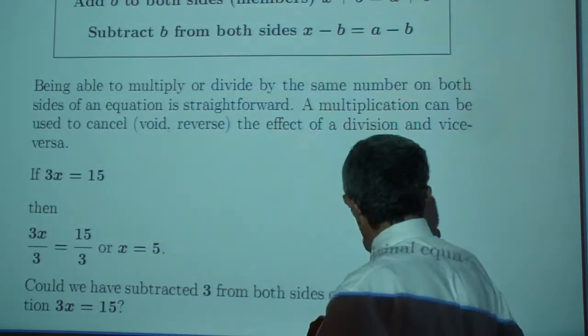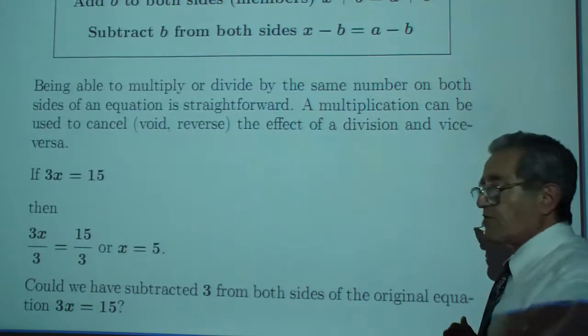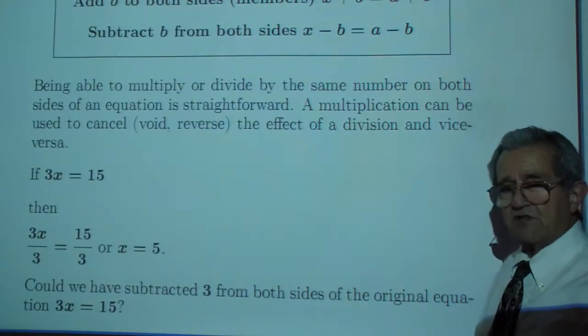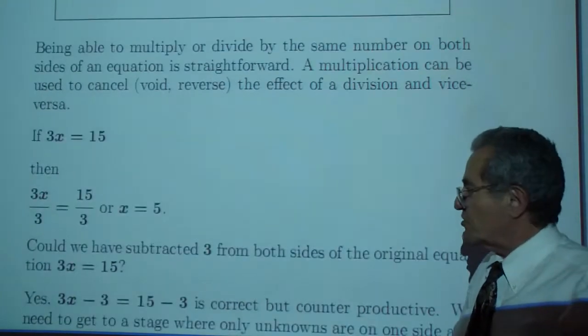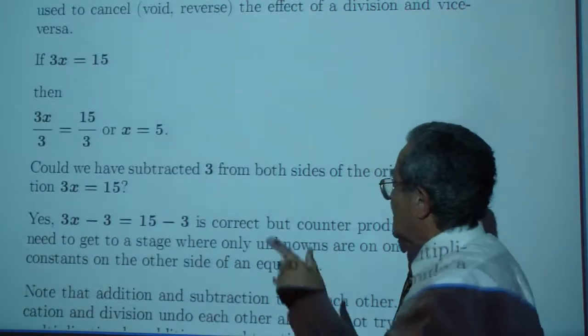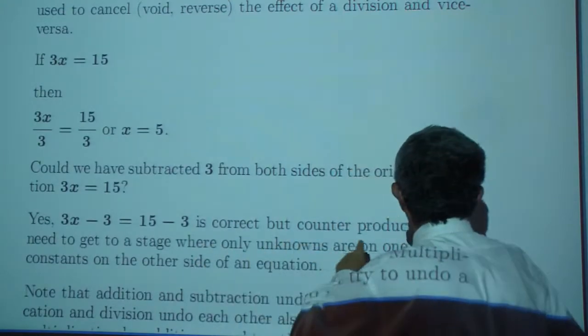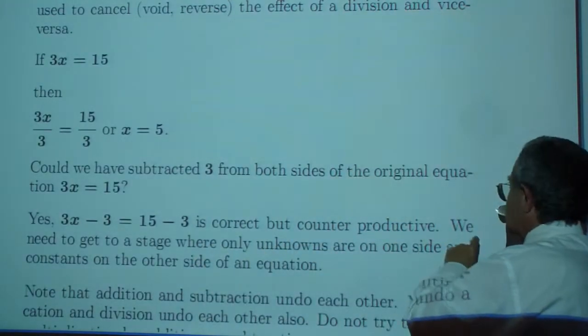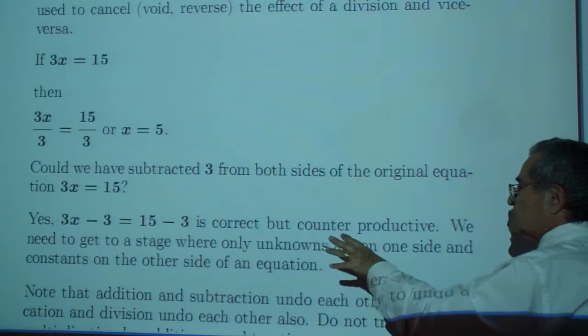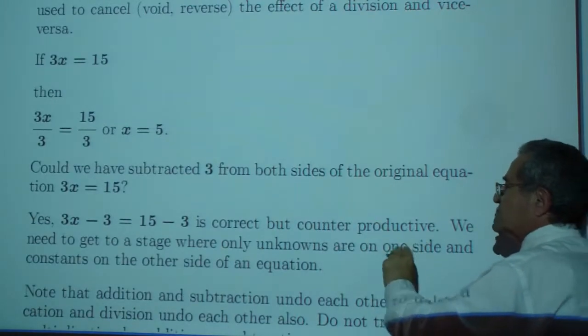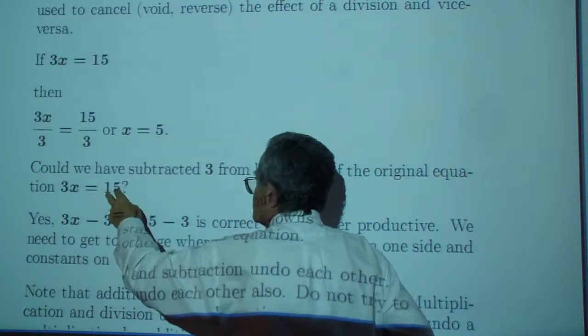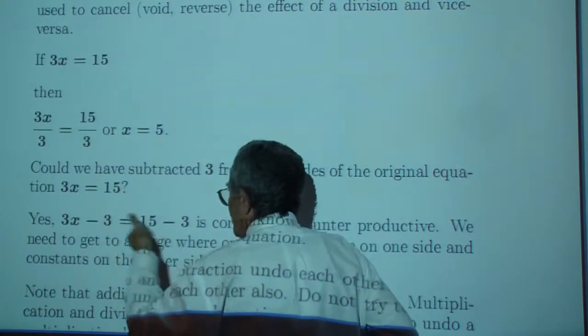Could we have subtracted 3 from both sides of the original equation 3X equals 15? Yes, 3X minus 3 equals 15 minus 3 is correct but counterproductive. We need to get to a stage where only unknowns are on one side and constants on the other side. Why go and mess it up?